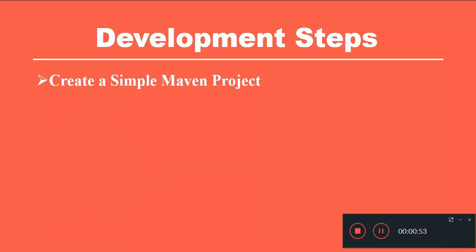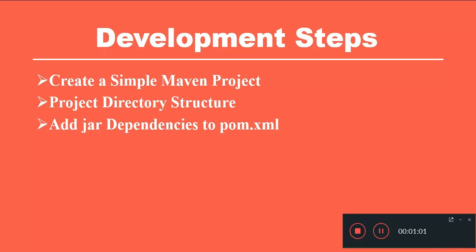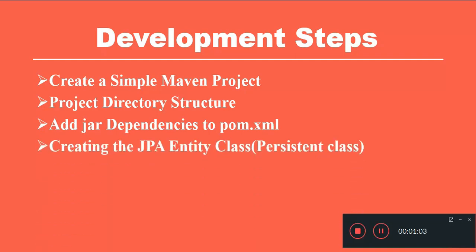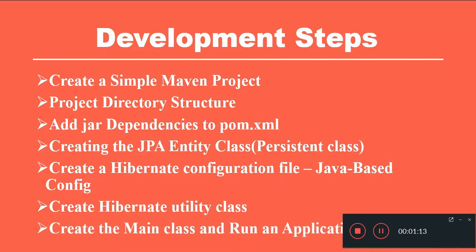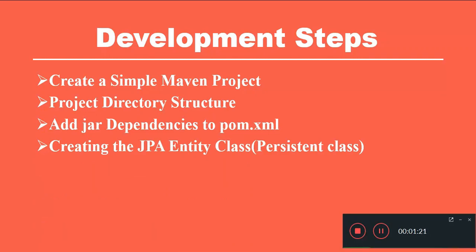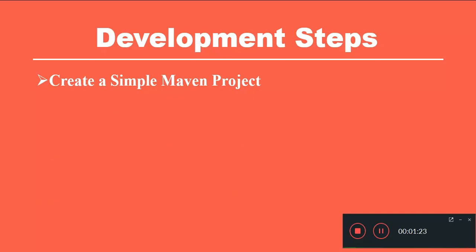First we create a simple Maven project and add a project structure to it, then we add all the Maven dependencies to pom.xml, create a simple JPA entity, create a Hibernate configuration class using Java-based configuration, create a Hibernate utility class which provides a session factory object, and finally create a main class and run the Hibernate application as a standalone. Let's implement these steps.